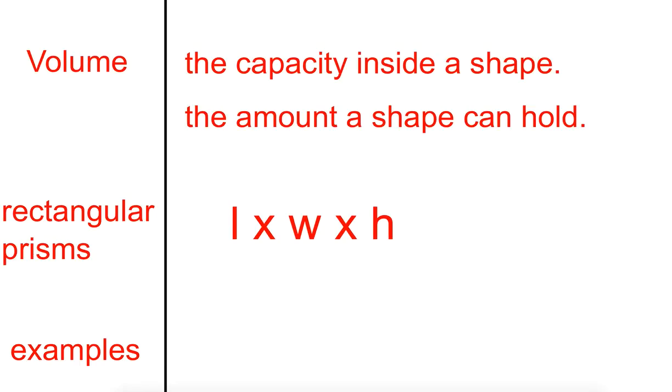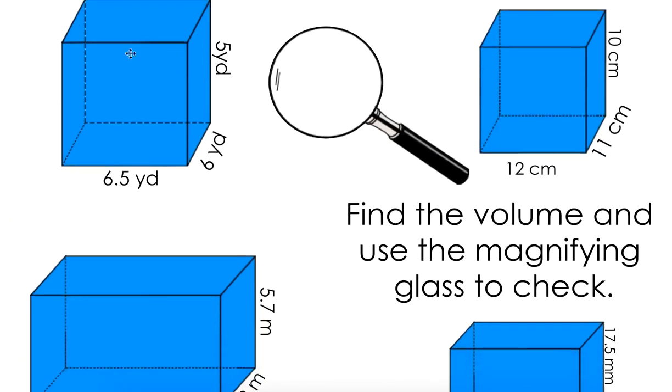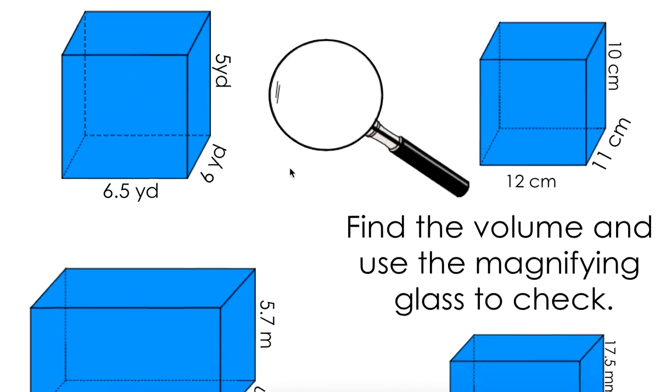Let's do an example. So here are some. Let's do this one. So you take your length times your width times your height. So you take 6.5 times your 6 times 5.